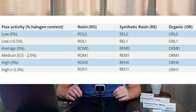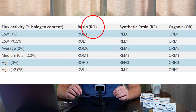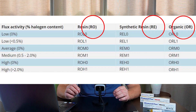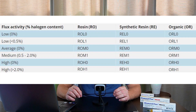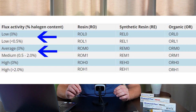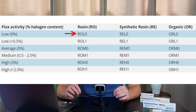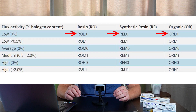Here's a classification table for different soldering flux types. The first two letters indicate the base: RO means resin-based, RE means synthetic resin-based, OR means organic-based (water or alcohol base). The third letter in the classification defines the soldering flux activity level: L for low, M for medium, H for high. Only ROL0, REL0, and ORL0 are considered no-clean.